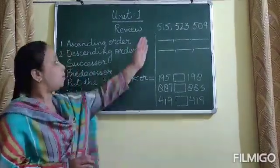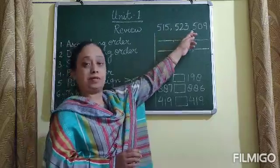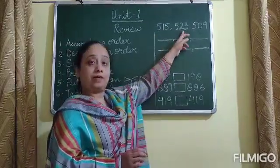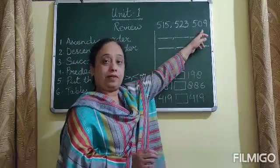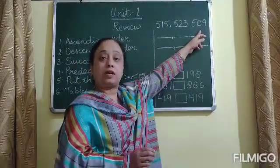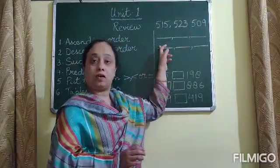Suppose we have these three numbers: 515, 523, and 509, and we have to arrange the numbers in ascending order. So, the smallest number here is 509.